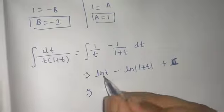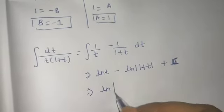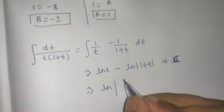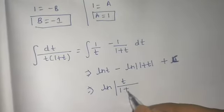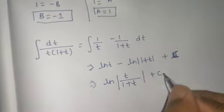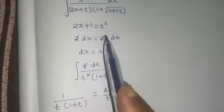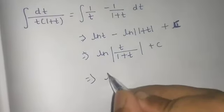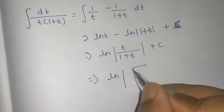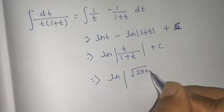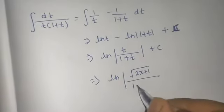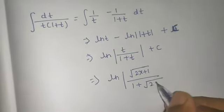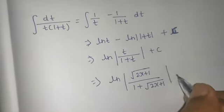Now ln t minus ln(1+t) is ln[t/(1+t)] plus constant C. What was your t? Because t squared is 2x+1, so t is √(2x+1). So ln[√(2x+1)/(1+√(2x+1))] plus constant C.